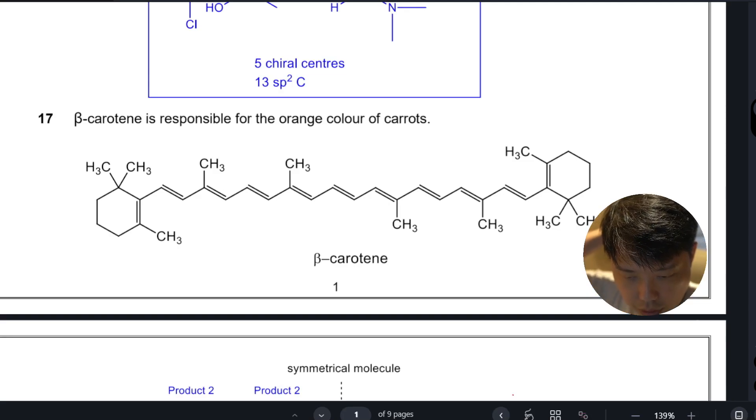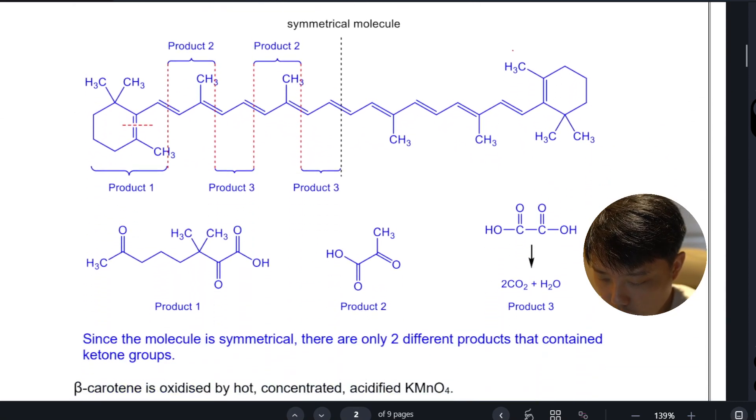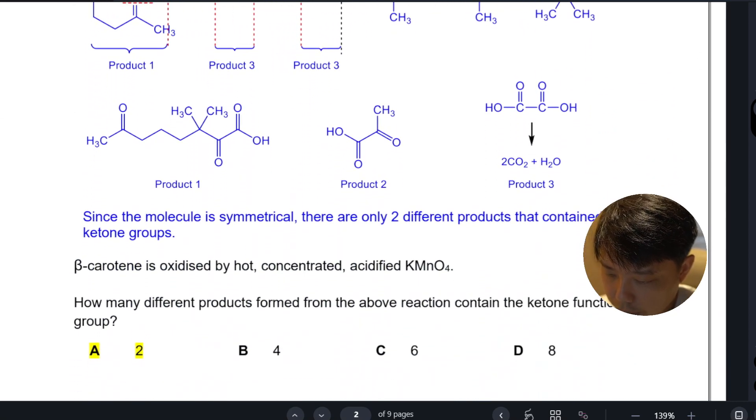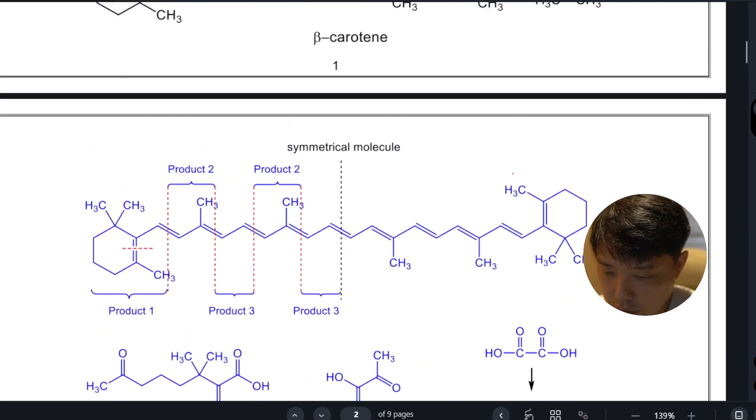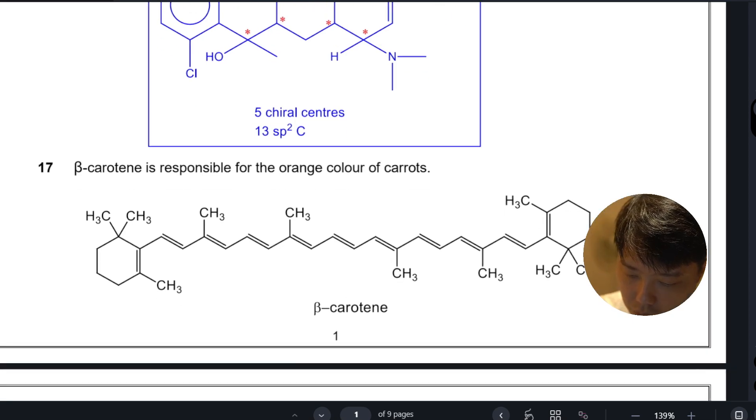Question 17: Beta-carotene is subjected to hot acidified KMnO4. How many different products formed contain the ketone functional group? If you go up here, you're going to cleave 1, 2, 3, 4...